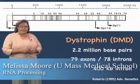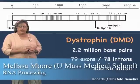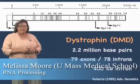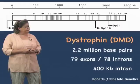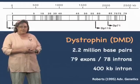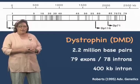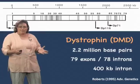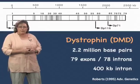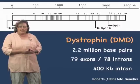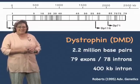The DMD gene is the second largest gene in the human genome. It's 2.2 million base pairs long. It has 79 exons, 78 introns, and one of those introns is 400,000 nucleotides long. It's really hard to get a sense of the scale of this thing just from hearing those numbers, so next I'm going to show you a movie so you can really see just how big this gene is.